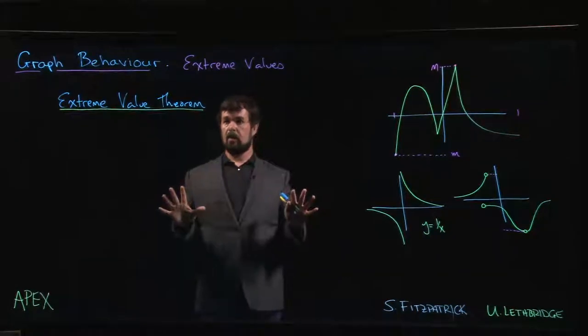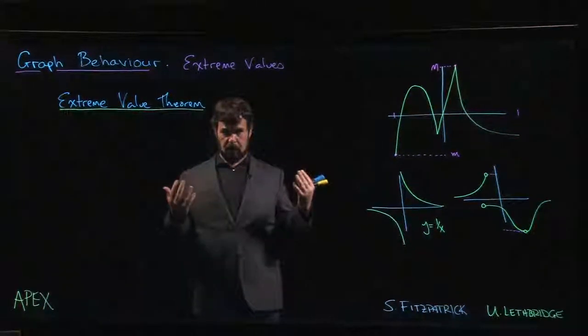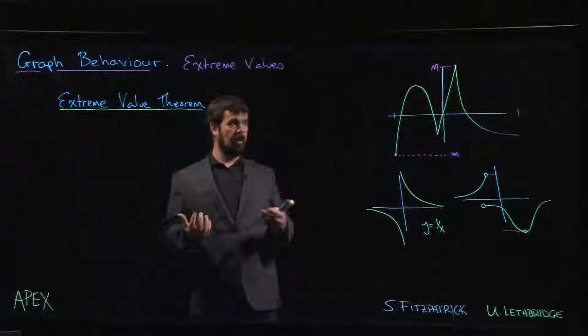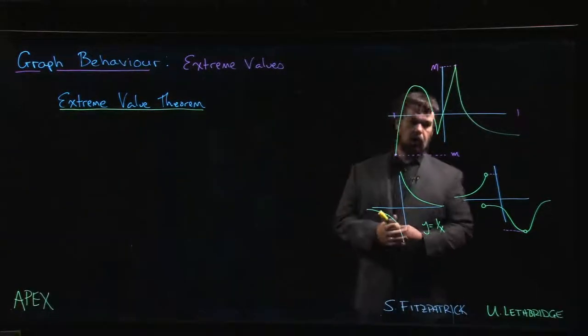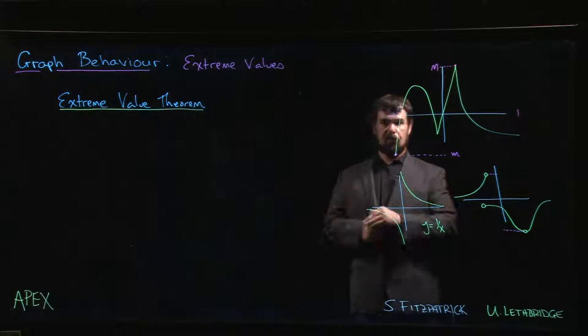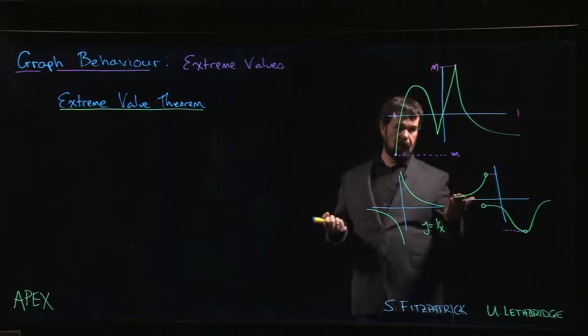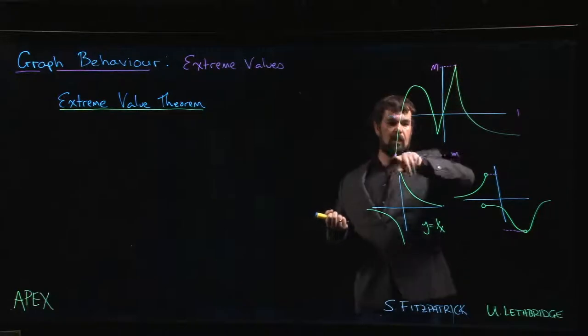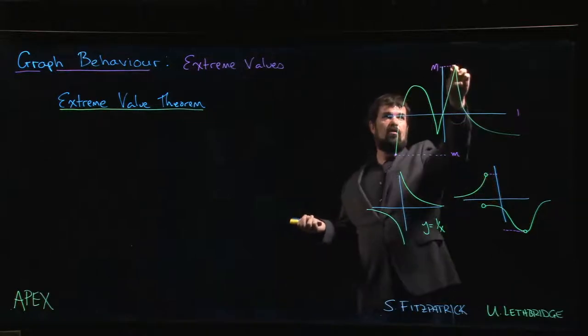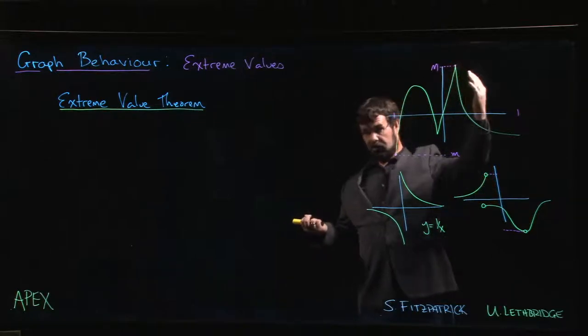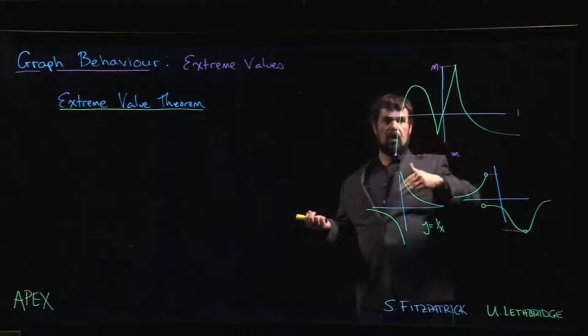Alright, so in the last video we introduced this idea of the absolute or global extreme values for a function. These are the largest y values or smallest y values that are attained by a function on its domain. So in this example here, this y value at the endpoint is the smallest that we see, this one up here at this cusp is the largest that we see. Every other y value for the function is somewhere in between.